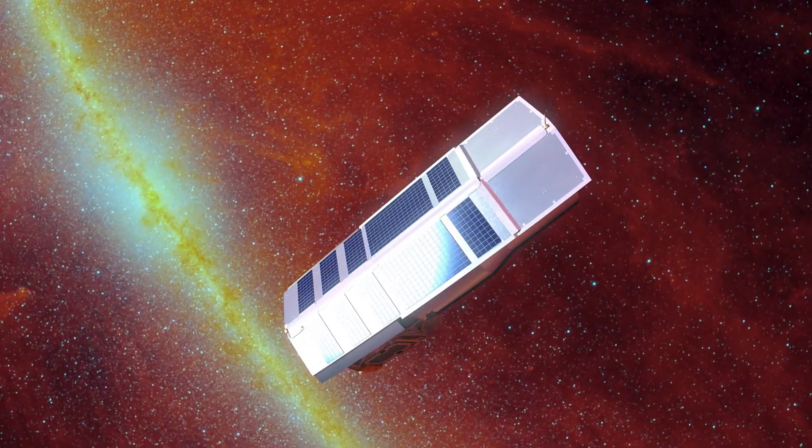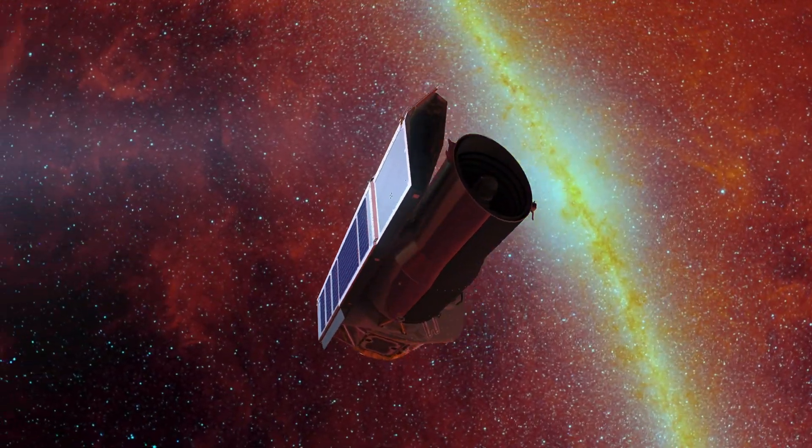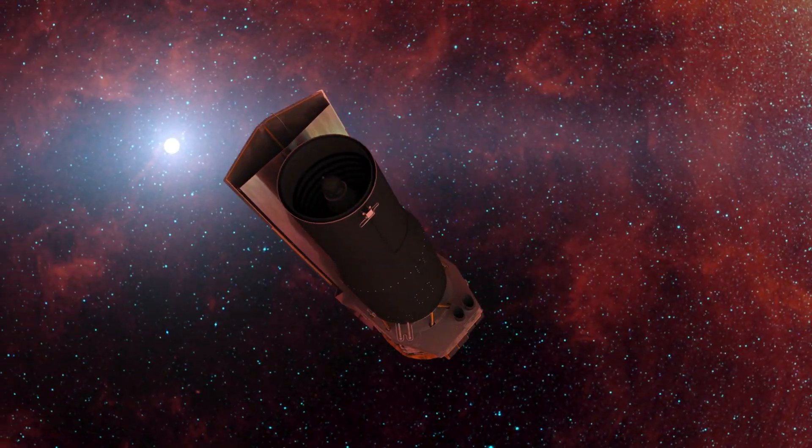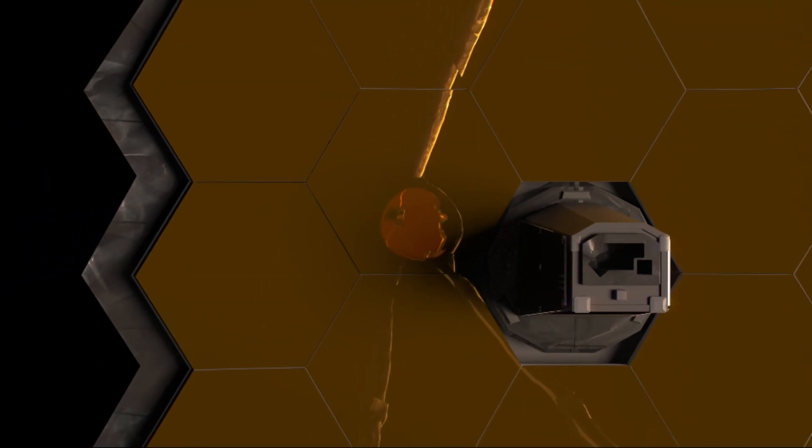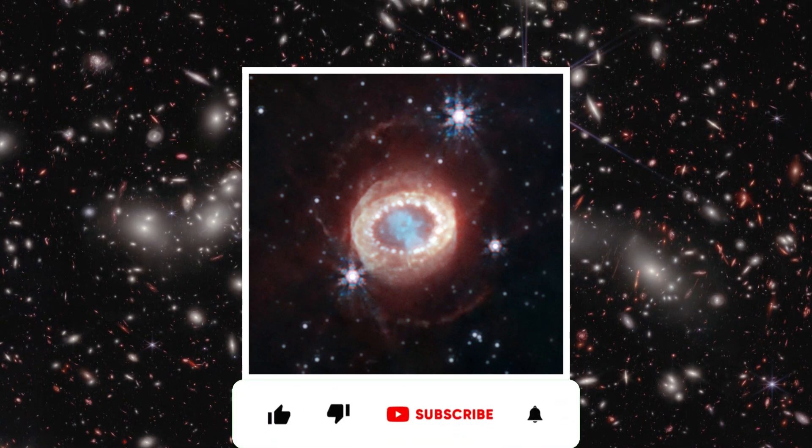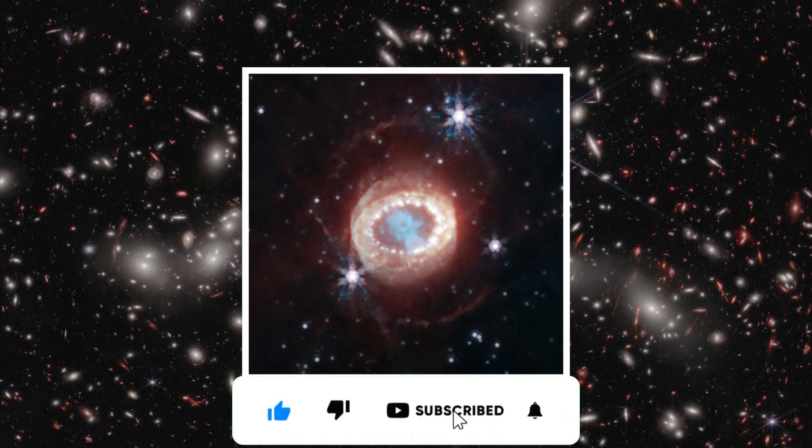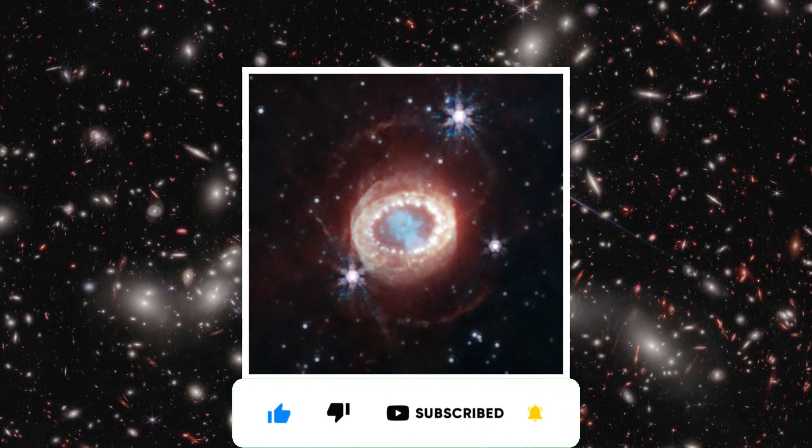Spitzer's infrared vision witnessed the evolution of SN 1987A for over 16 years, but it could not match the clarity and resolution of Webb Telescope. This new image is a treasure trove of information for astronomers to study the aftermath of a supernova.